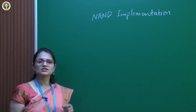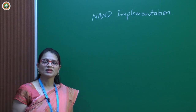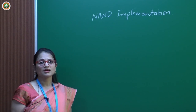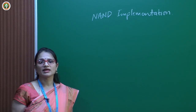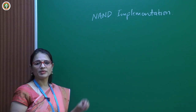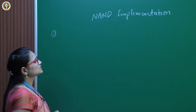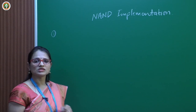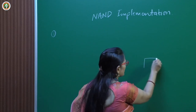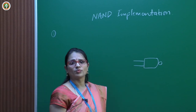First, let us look at NAND implementation. To understand this, we first need to understand how the NAND gate is used to design the basic gates. The NAND gate can work as a NOT gate, the NAND gate can act as an OR gate, and NAND gate can be used to design the AND gate.